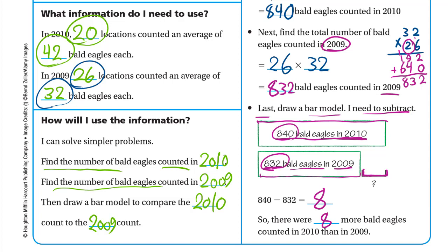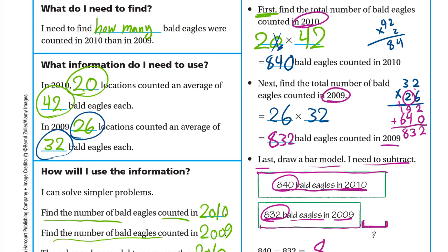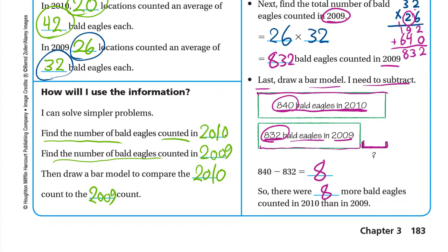840 minus 832 equals 8. So there are 8 more bald eagles counted in 2010 than in 2009. To summarize: we multiplied 20 by 42 to get 840 for 2010, then 26 by 32 to get 832 for 2009, and subtracted to find there were 8 more bald eagles in 2010.